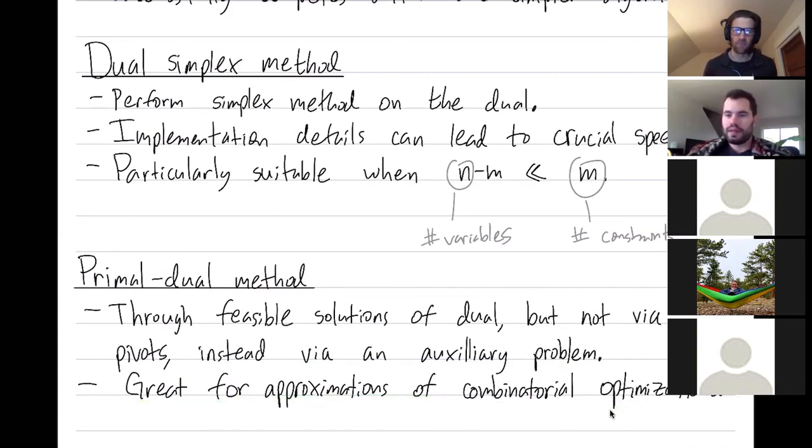And they're particularly really nice for giving good approximations on combinatorial optimization problems. I suspect I might have butchered that description because I don't know much about primal dual methods. Any additional comments?